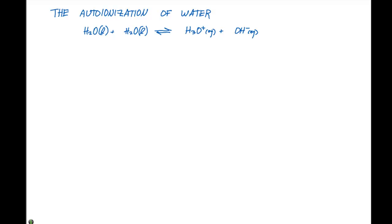If we have a reaction expressed as H2O liquid plus H2O liquid in equilibrium with H3O+ plus OH−, we can examine some of the conditions of water. For example, H3O+ is an acid, and OH− is a base.